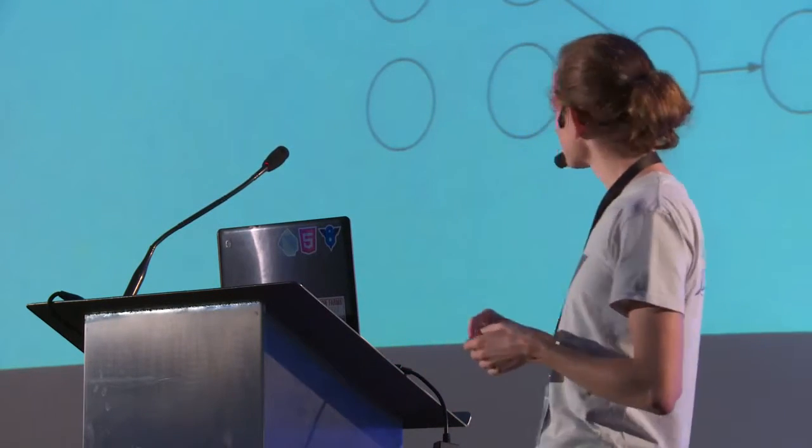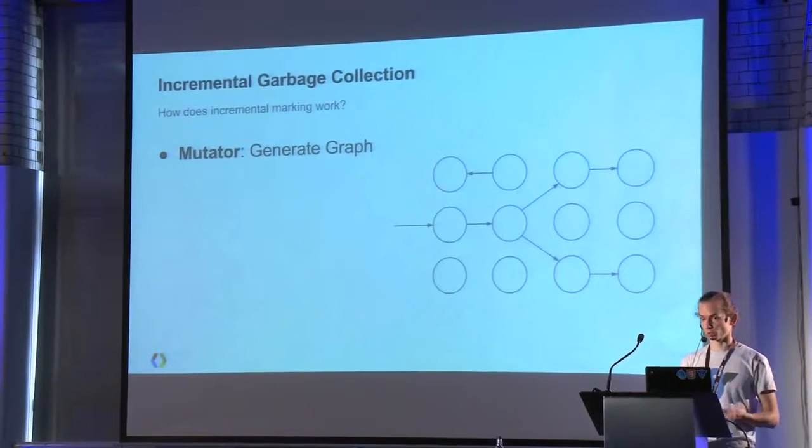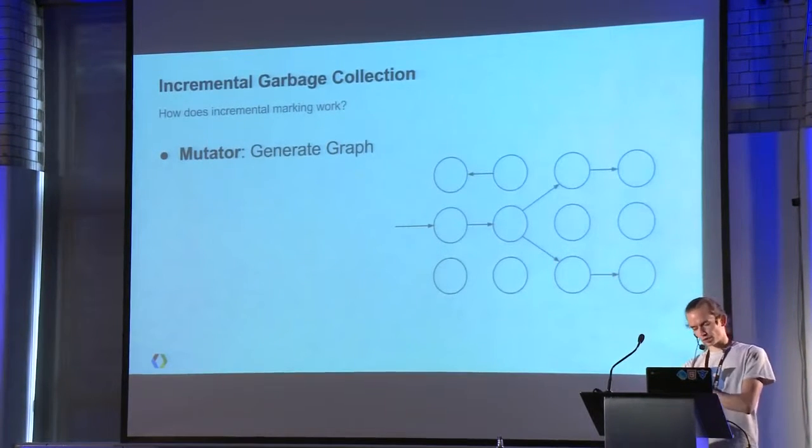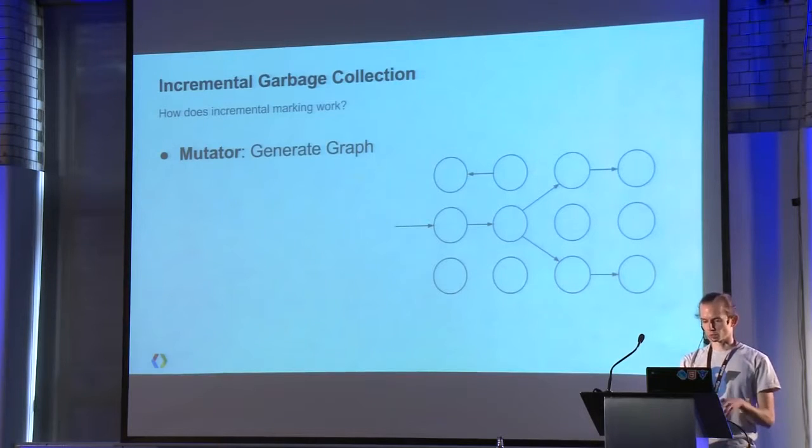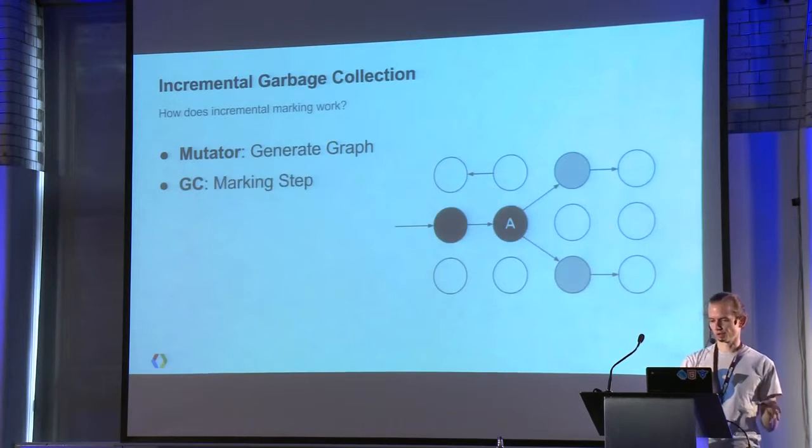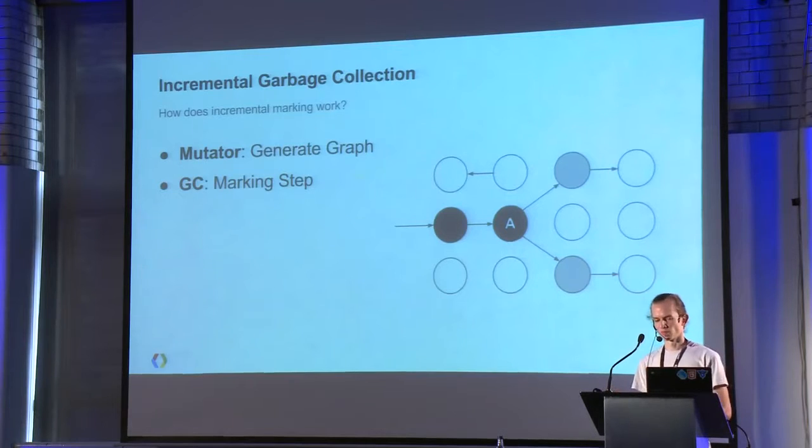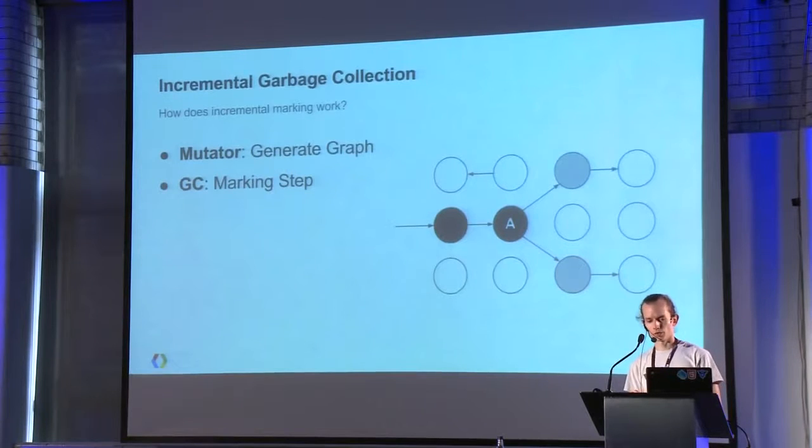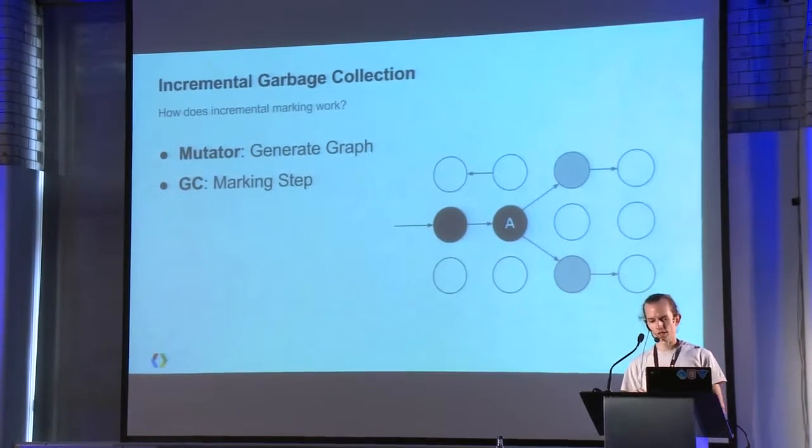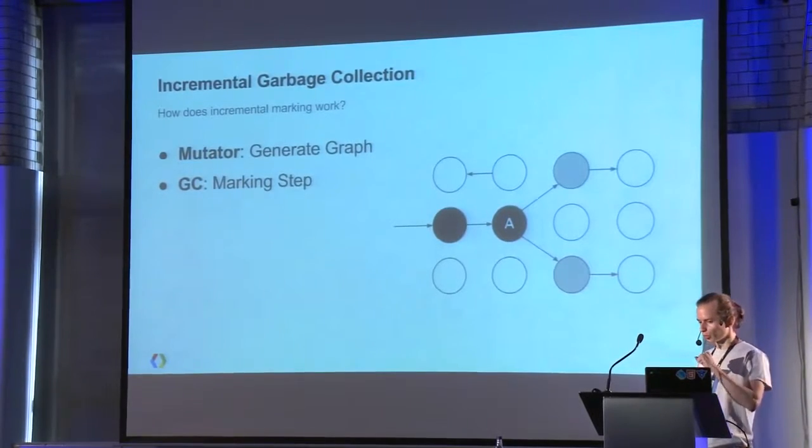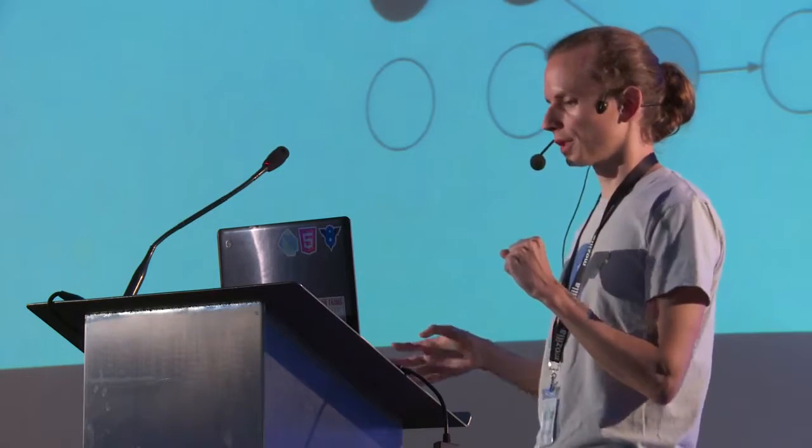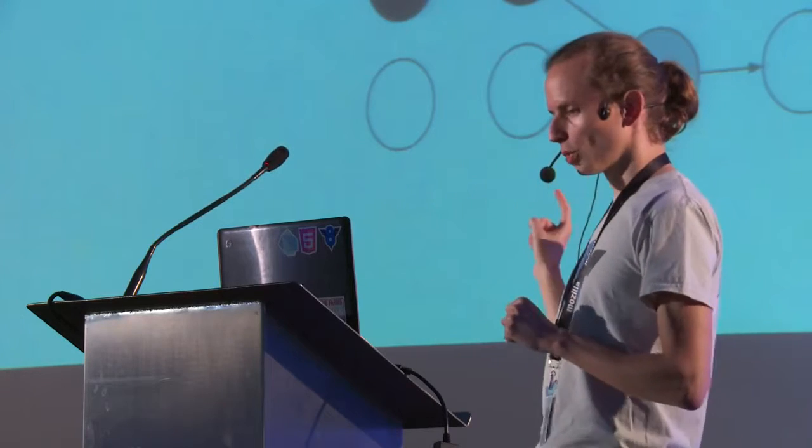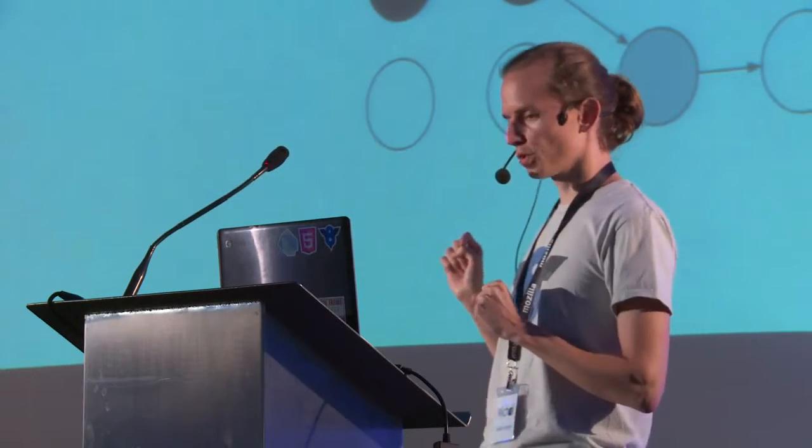So at first, the mutator creates a graph. A bunch of objects lying around in the heap. They are somehow connected. We don't know about the actual structure of the objects, about the actual structure of the graph. But we are going to start scanning it. So the GC starts with its first marking step. So it starts with some root set, indicated by the leftmost arrow. And it is going to scan through a couple of objects. And at a certain point, decide to stop, to let the mutator continue. So we have successfully scanned two objects, and marked two objects to be scanned. And now we are going to stop and let the mutator continue.